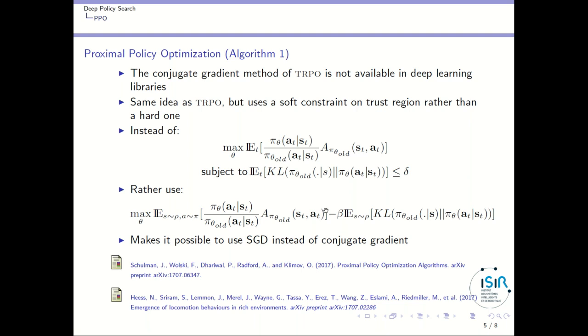And I won't again go into the technical details of why this is a good idea to do so. But if you do so, you will be able to use stochastic gradient descent instead of using conjugate gradient. The point is that you will have to tune this parameter beta so as to enforce the trust region constraints without being too detrimental to the performance of the policy that you are looking for.